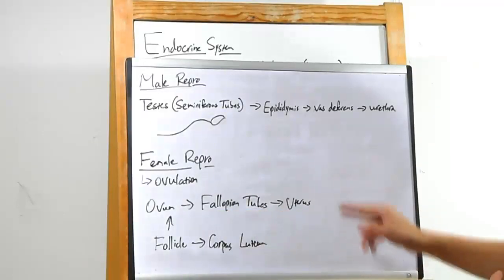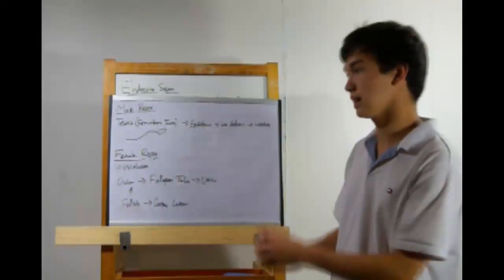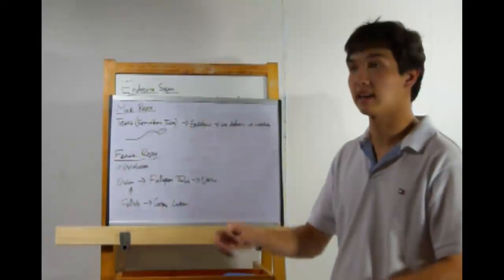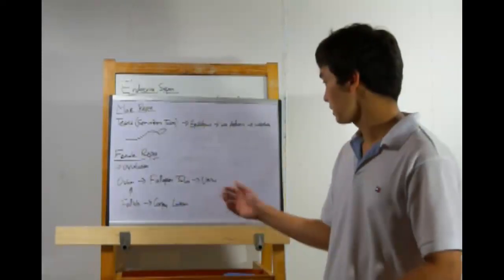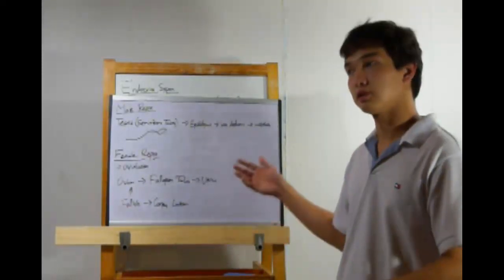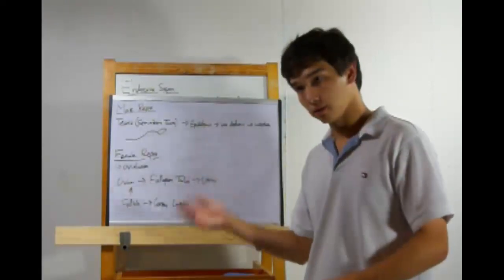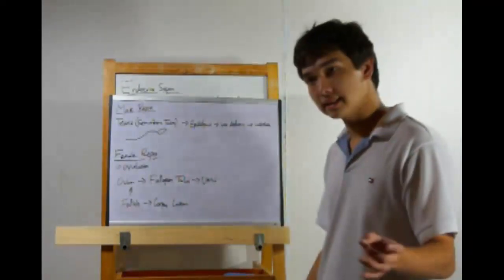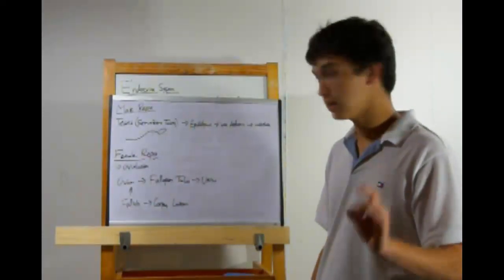...if one happens to occur. Anyway, back to the ovum. This enters the uterus. If it gets fertilized, it will embed itself in the uterine lining, and the child will develop. If not, the ovum dies and the uterine lining is shed through the cervix, through the vagina, and out of the body. And that's it for ovulation.